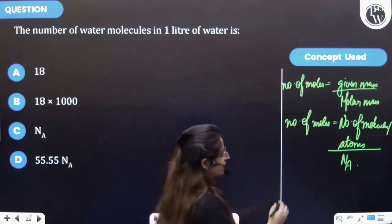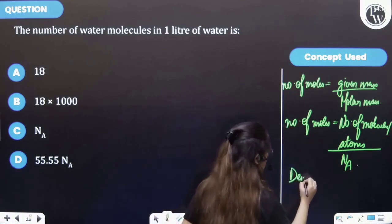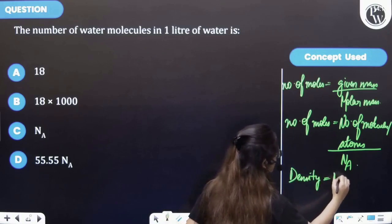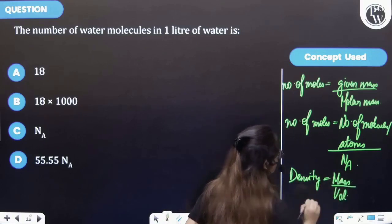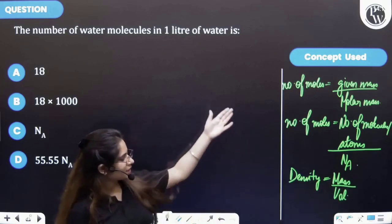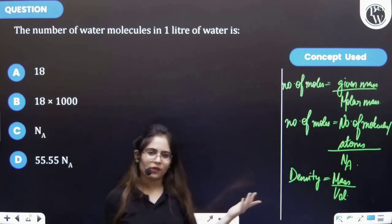Also, density is equal to mass by volume. Now by using these three concepts, let's try to find our answer.